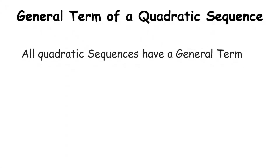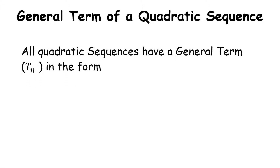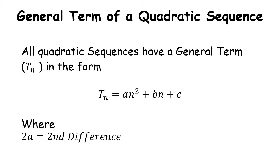Now let's talk about the general term of a quadratic sequence. All quadratic sequences have a general term TN in the form TN equals AN squared plus BN plus C, where 2A equals the second difference. That's a really important piece of information — without remembering this you'll struggle to work out TN. This formula and the key relationship that 2A equals the second difference appear on exam papers.